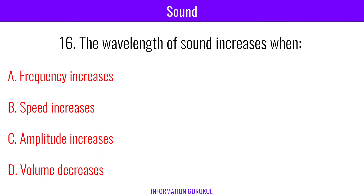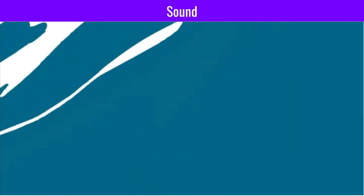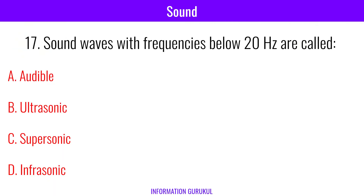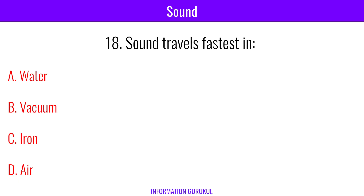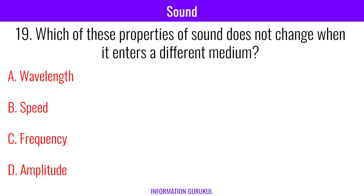The wavelength of sound increases when speed increases. Sound waves with frequencies below 20 Hertz are called infrasonic. Sound travels fastest in iron. Which of these properties of sound does not change when it enters a different medium? Frequency.